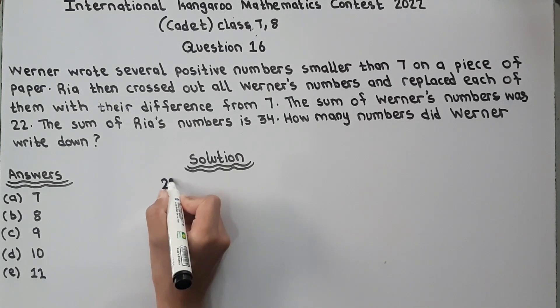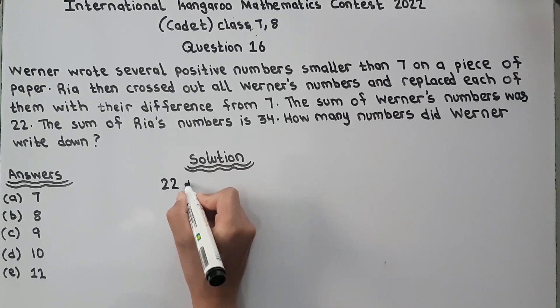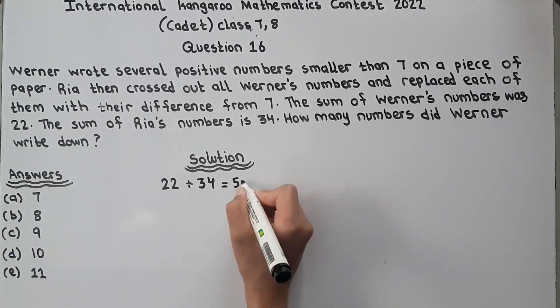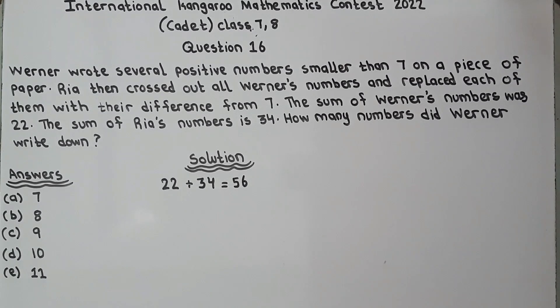So Werner's numbers plus Ria's numbers is equal to 22 plus 34 equals 56. This is total. Now let's take N as a number.